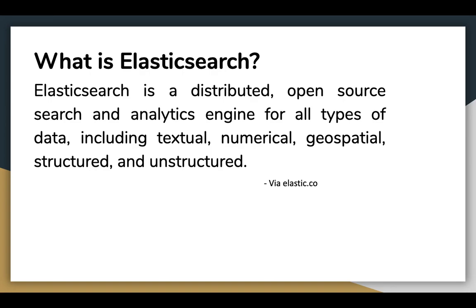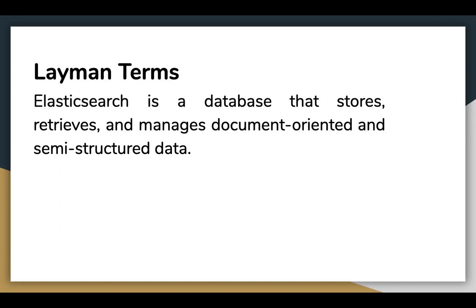We'll talk about Logstash and Kibana later. Let's actually see what Elasticsearch means in very simple terms. Elasticsearch is a database that stores, retrieves and manages document-oriented and semi-structured data. When you use Elasticsearch, you store data in JSON document form, then you query them for retrieval.